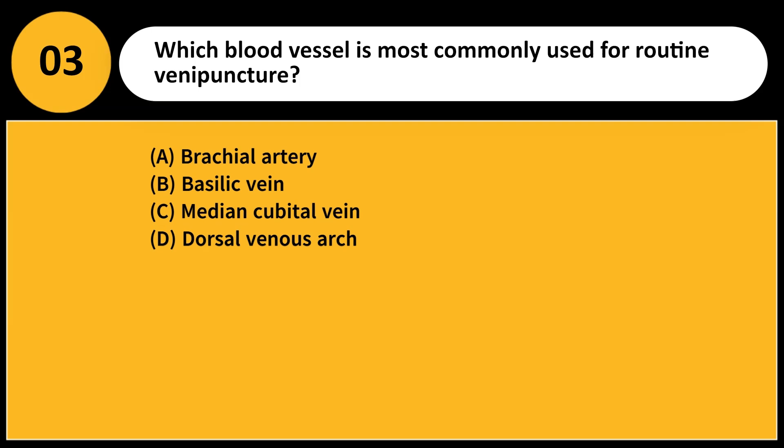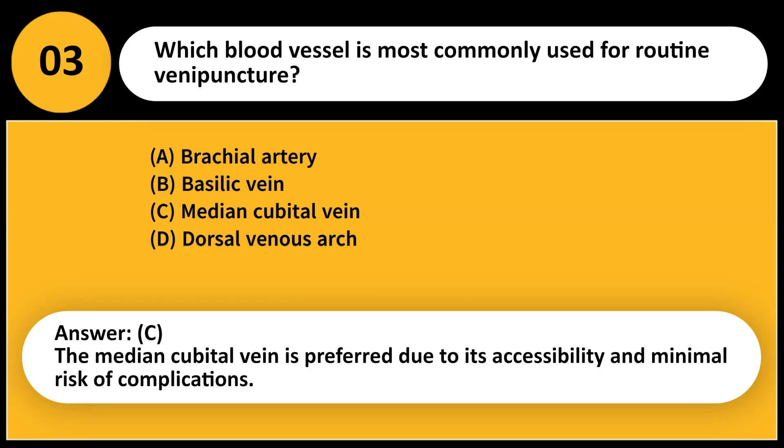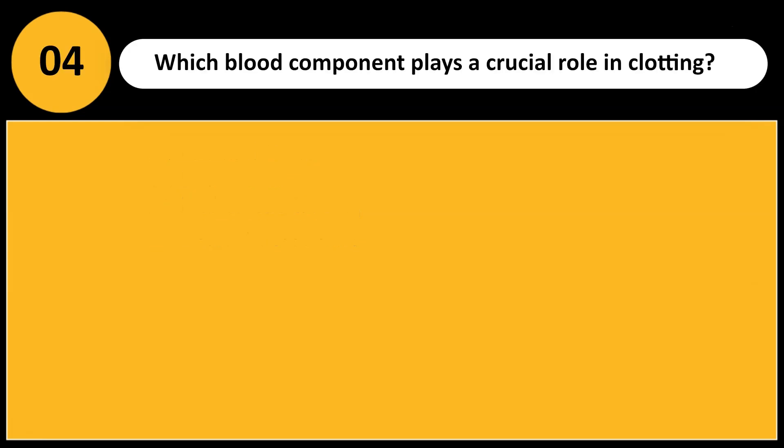Which blood vessel is most commonly used for routine venipuncture? A. Brachial artery. B. Basilic vein. C. Median cubital vein. D. Dorsal venous arch. Answer: C. The median cubital vein is preferred due to its accessibility and minimal risk of complications.